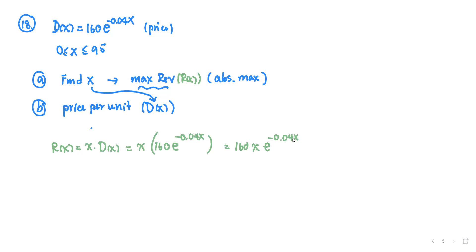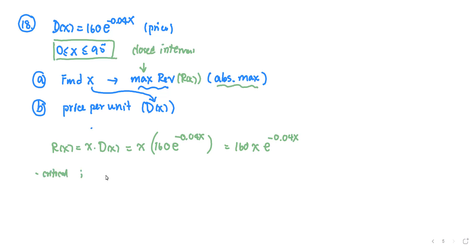This is the revenue function — don't miss the zero. To find the x that maximizes the revenue, since this is a closed interval, you're looking for the absolute maximum. That means we're going to find the critical number, first by finding R prime and setting it equal to zero. What rule are you applying? The product rule, because you see a product of x and an exponential.